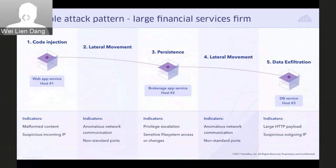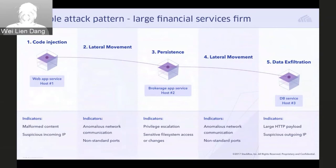The attacker then moves laterally to the DB service, which is likely the intended target of this attack vector. If the attacker starts to exfiltrate data from the DB service, StackRox detects this based on indicators such as a substantial HTTP payload or suspicious outgoing IP, which may represent command and control communication.